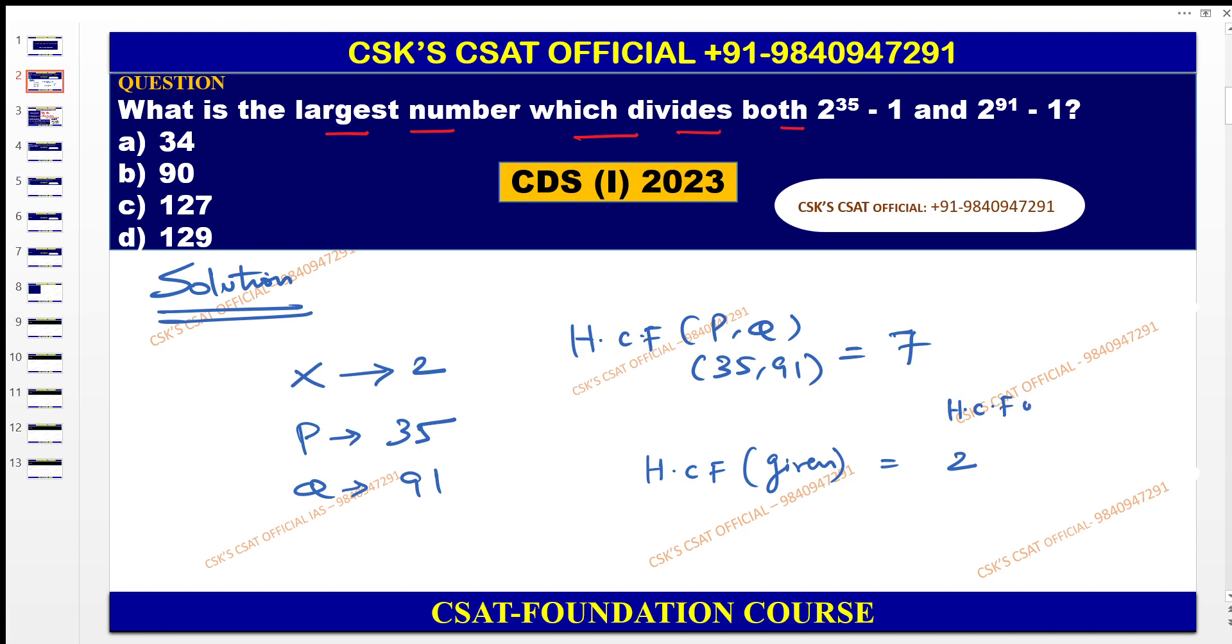The HCF of p comma q minus 1, which is equal to 2^(HCF of p comma q), that is nothing but 2^7 - 1. You know 2^7 is nothing but 128 minus 1. So therefore 128 - 1 is equal to 127. So therefore the largest number which divides both is nothing but 127.